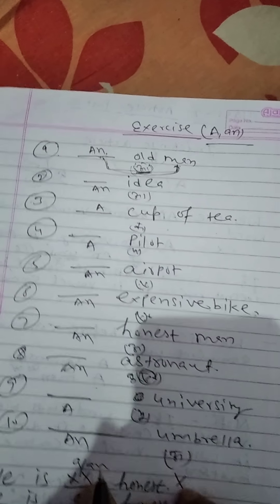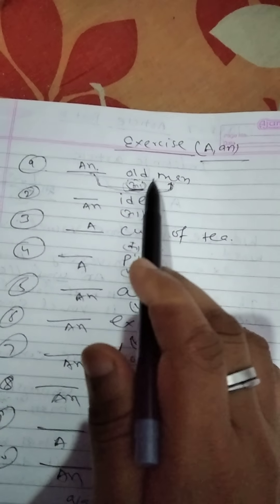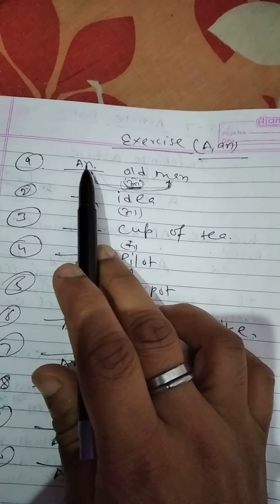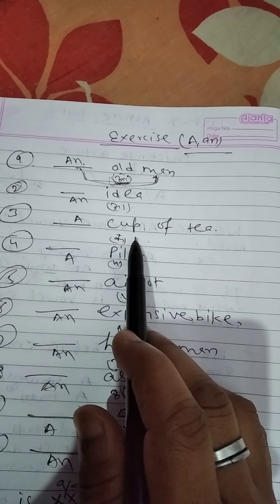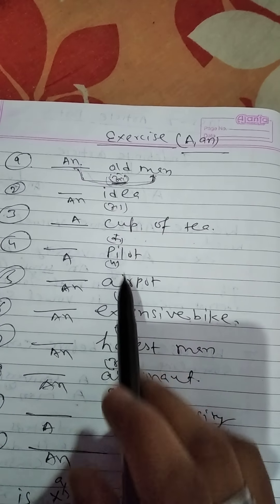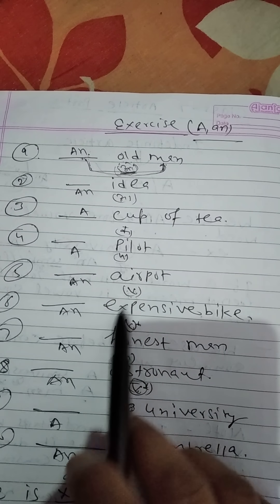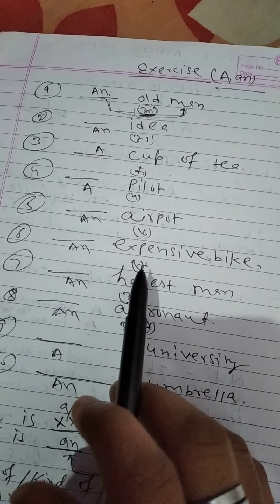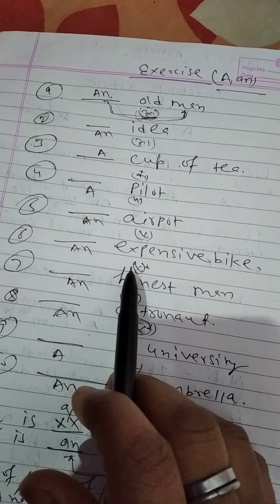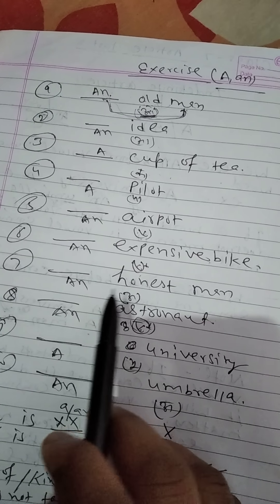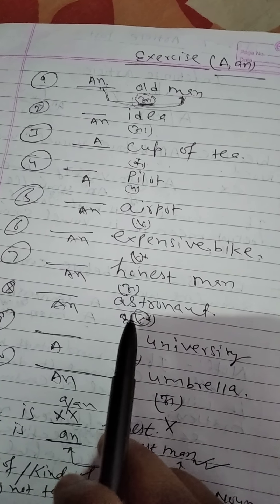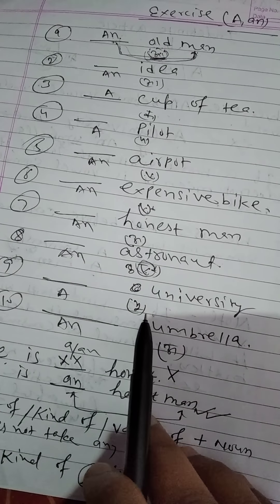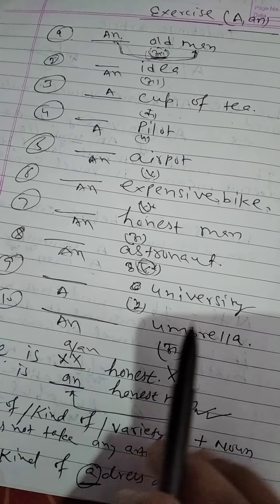Let's do some work. 'An old man' — O is a vowel sound. 'An idea.' 'A cup of tea' — C is a consonant sound. 'A pilot.' 'An airport.' 'An expensive' — E is a vowel sound. 'An honest man.' 'An astronaut.' 'A university.' 'An umbrella.'